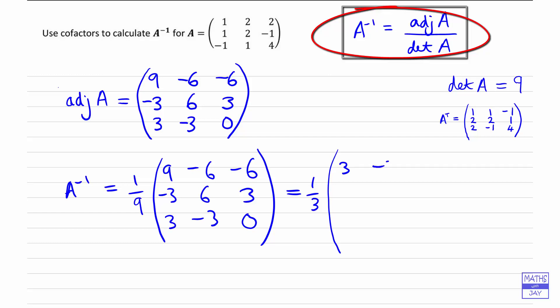we get three, minus two, two, minus one, two, one, one, minus one, zero. So that is the inverse of matrix A.